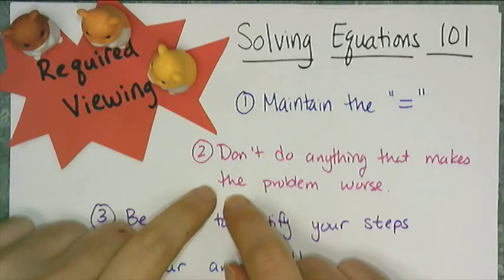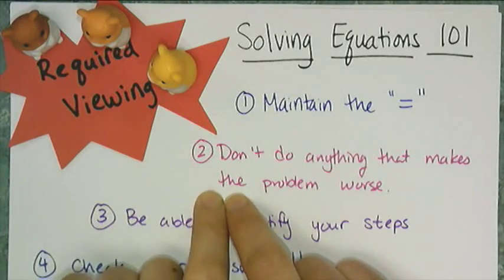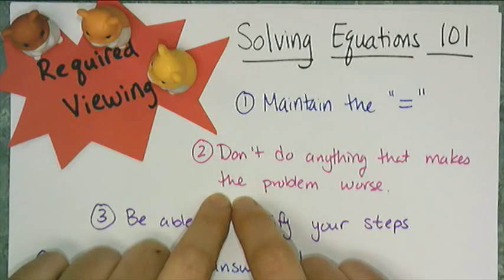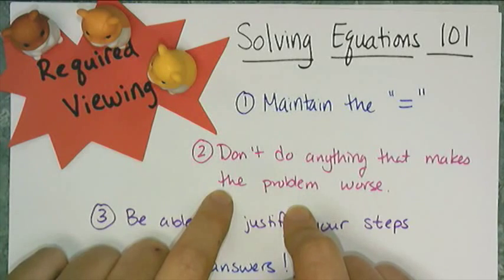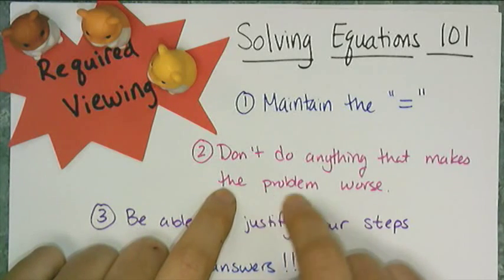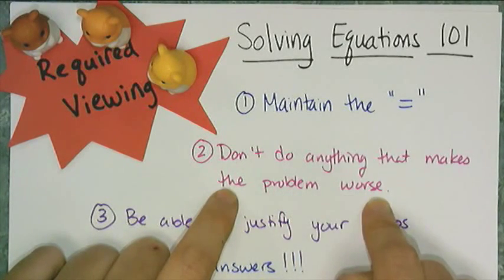So when you're solving an equation, what you're really doing is you're undoing whatever has been done to the unknown. And so you need to make sure that each step you take gets rid of something that was done. So don't do anything that makes things worse. Choose your POEs wisely.